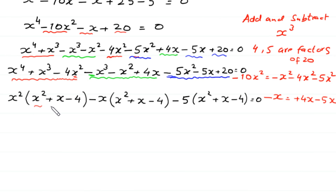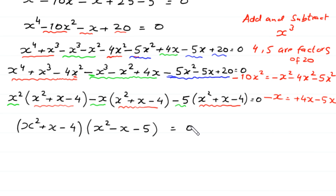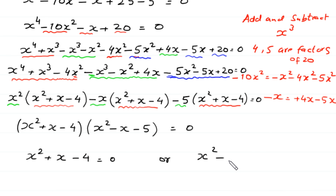As you can see, x squared plus x minus 4 is a common factor in all three groups. Factoring it out gives (x squared plus x minus 4) times (x squared minus x minus 5) is equal to 0. So either x squared plus x minus 4 equals 0, or x squared minus x minus 5 equals 0.